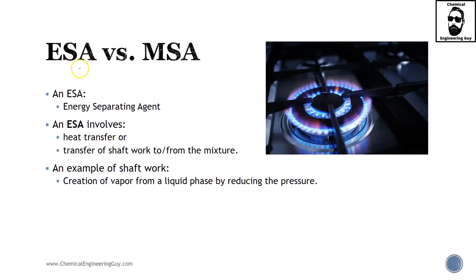Let's deepen a little bit on the topic of MSA and ESA. ESA stands for energy separating agent, and typically ESA will involve the two classic or most common types of energy involved in process engineering: heat transfer — either adding or removing heat — and transfer of work via shaft work.